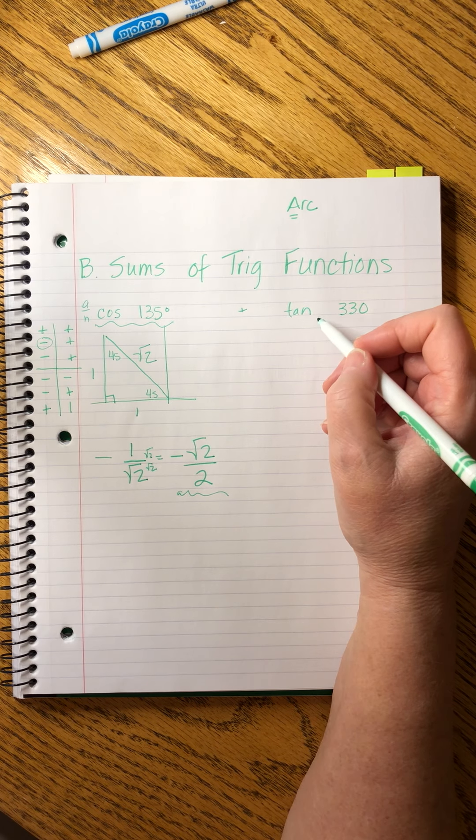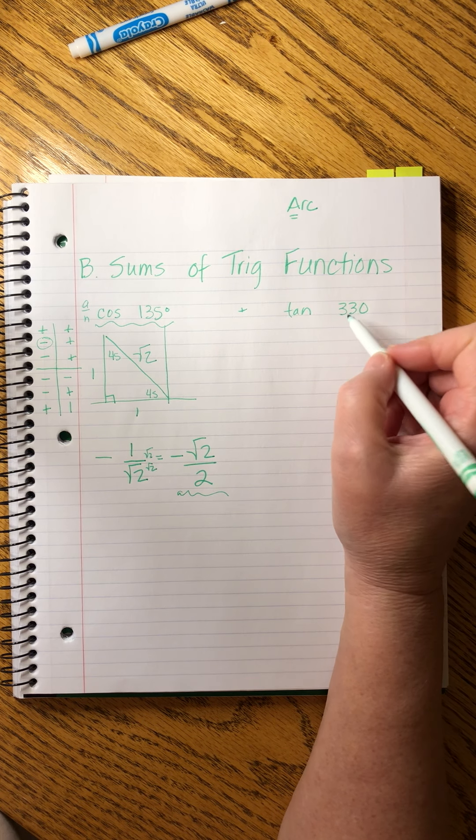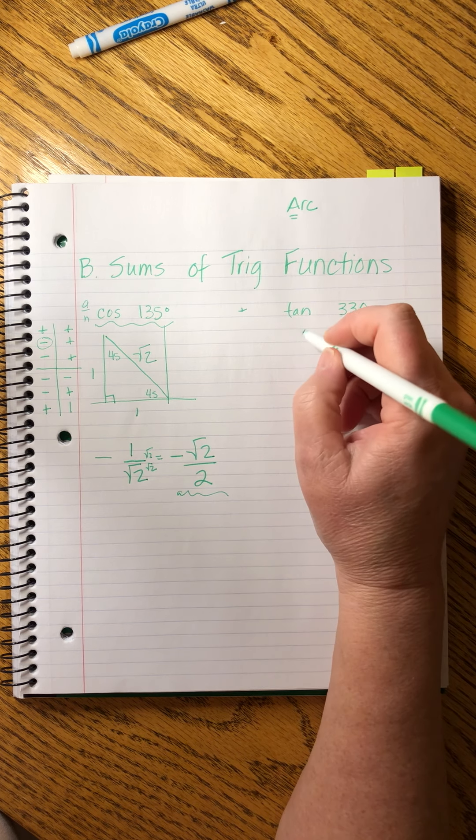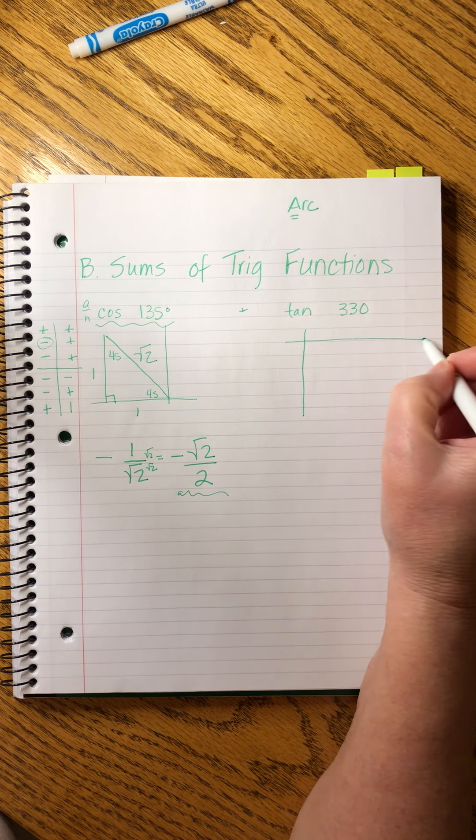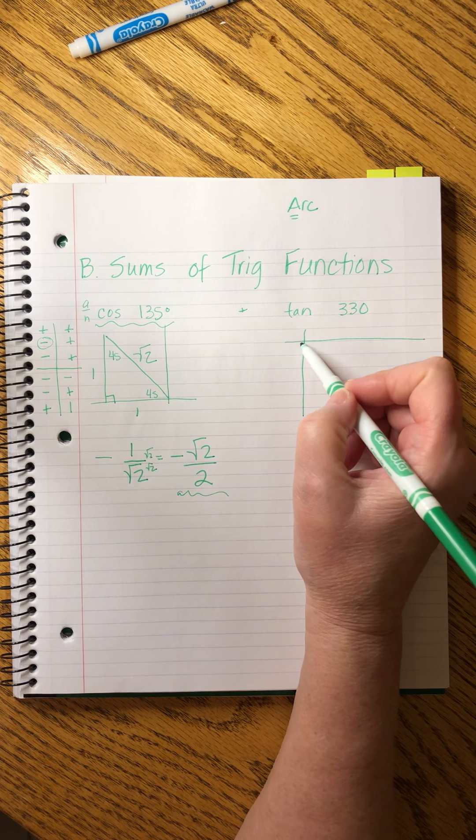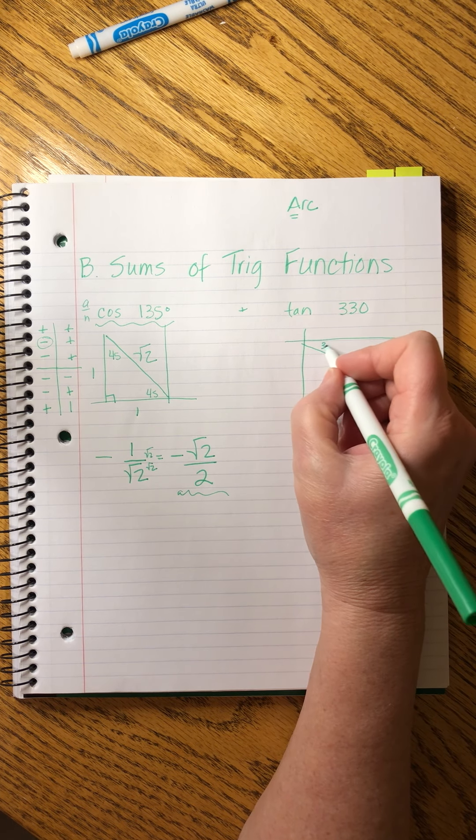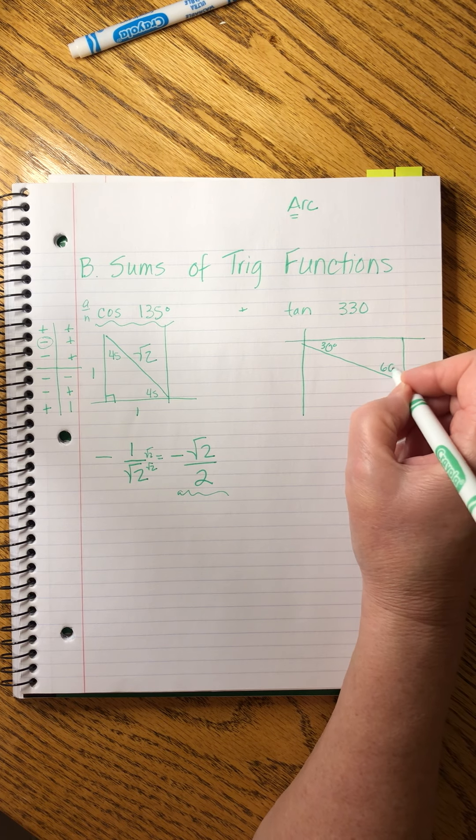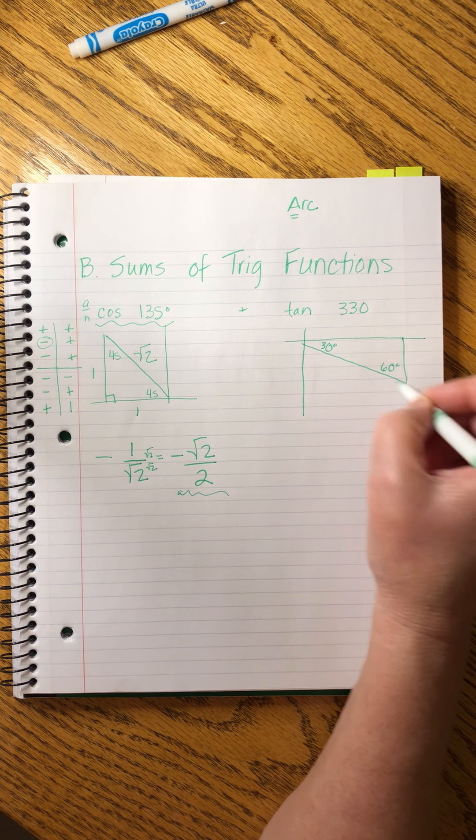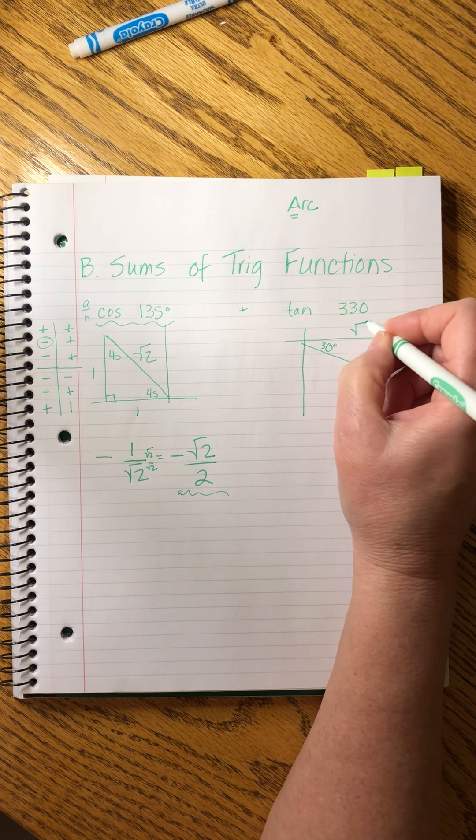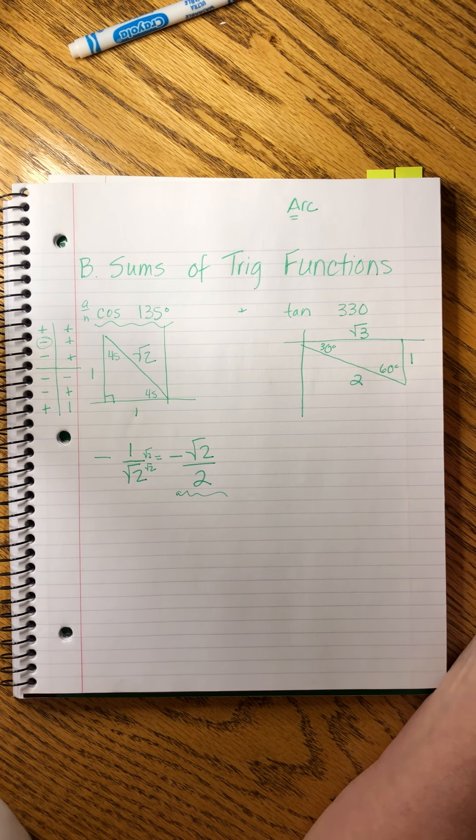And let's try this guy tangent of 330. It's positive. So it's 90, 180, 270. It's going to be in the fourth quadrant. And I can see it's going to be 30 short. This is going to be a 30 degree angle. That means this is the 60. This is the side that stays two. This was the side that was chopped in half. So this is square root of three.